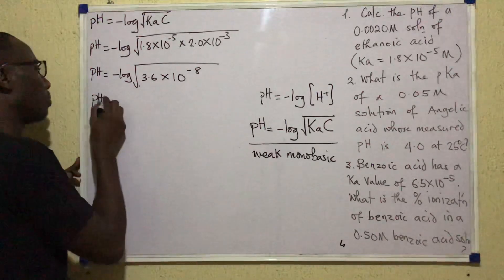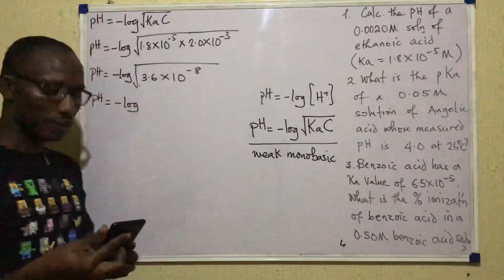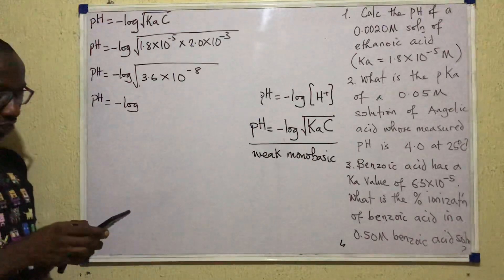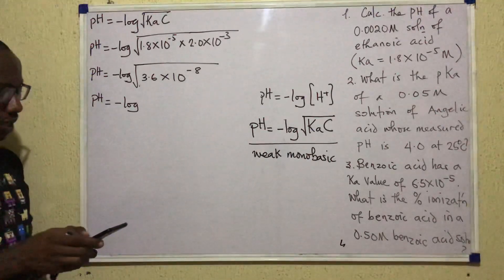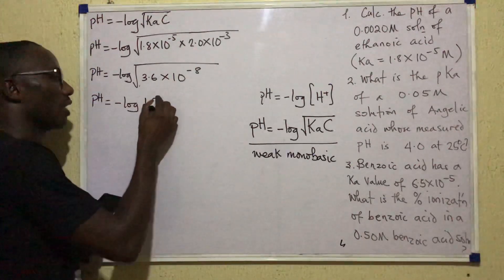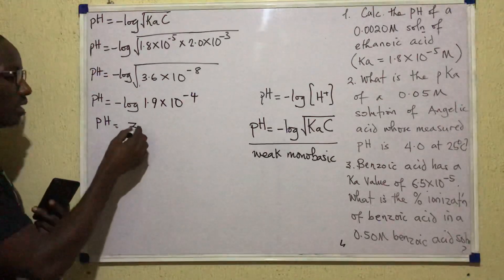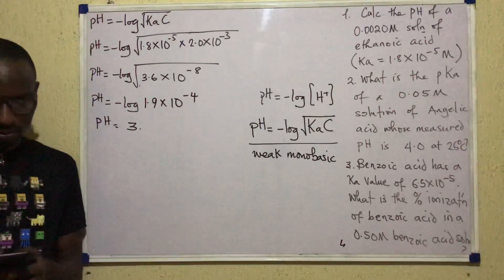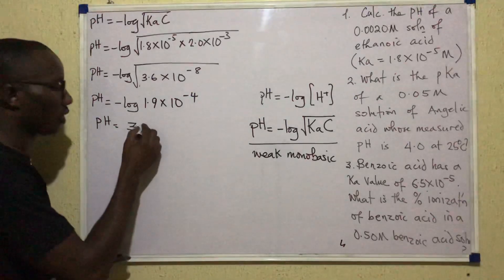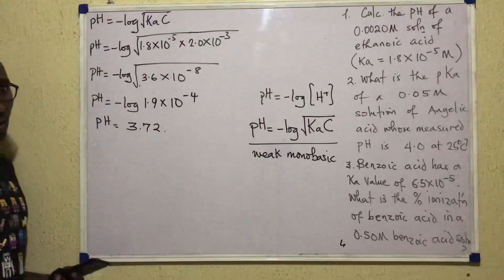pH equals negative log of √(1.8 × 10⁻⁵ × 2.0 × 10⁻³). First, 1.8 × 2.0 = 3.6, so the product is 3.6 × 10⁻⁸. Taking the square root gives 1.9 × 10⁻⁴. So pH equals the negative log of 1.9 × 10⁻⁴, which gives us 3.72. The pH of the solution is 3.72.